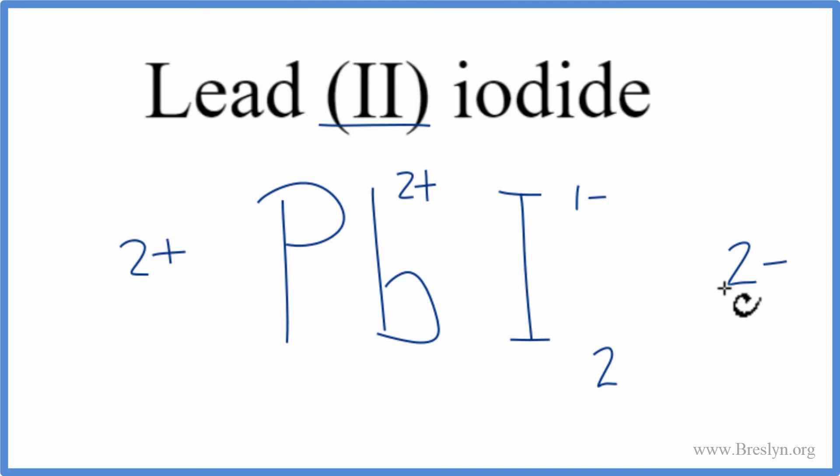This is the correct formula for lead (II) iodide. Let's clean this up. And that's it. Lead (II) iodide, PbI₂. This is Dr. B, and thanks for watching.